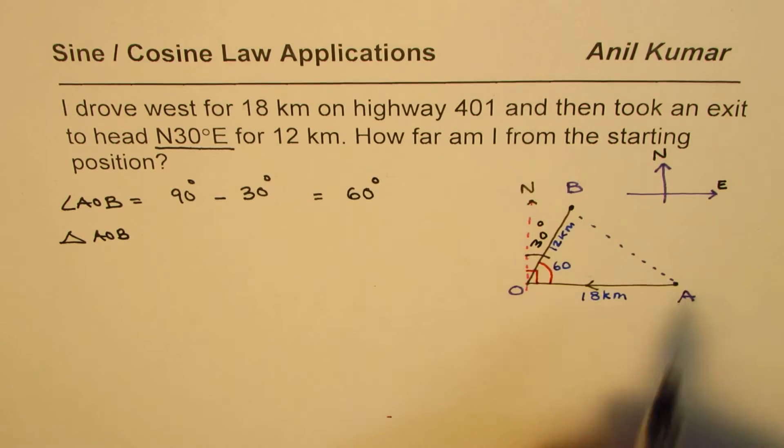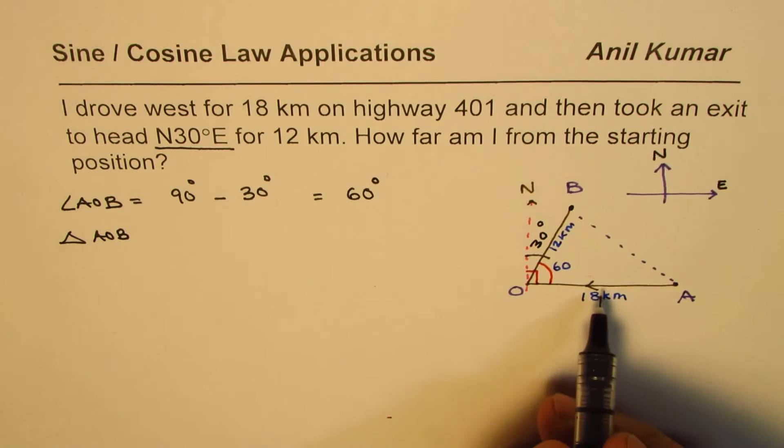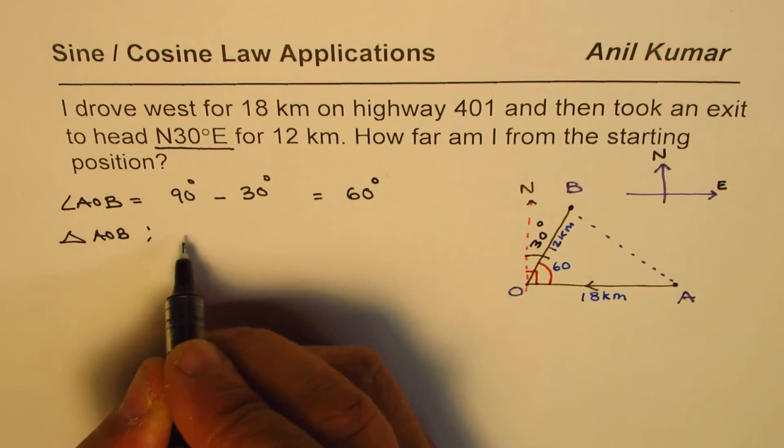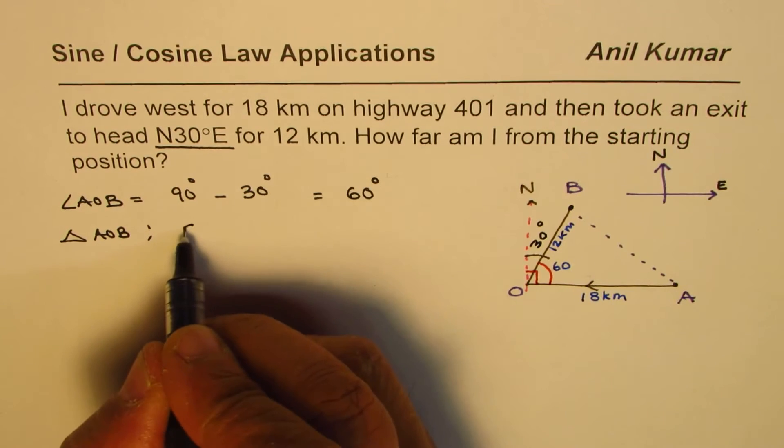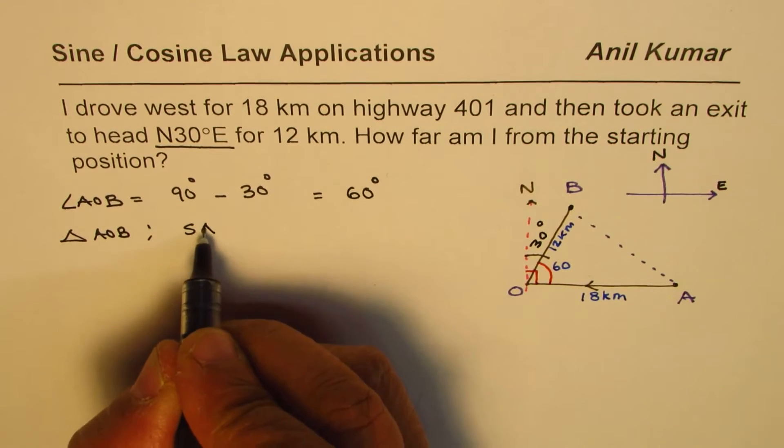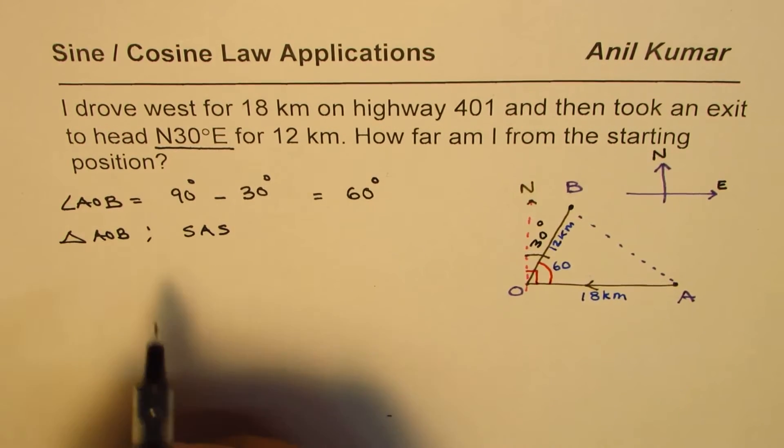Now we have a triangle AOB. If we solve this triangle we can find AB. We are given two sides and an included angle.